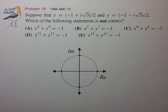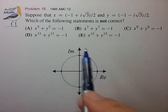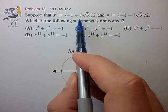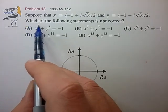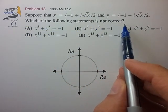Hi, and here's our second example complex number problem from the AMC-12. Suppose that x is equal to (-1 + i√3)/2 and y is equal to (-1 - i√3)/2. Which of the following statements is not correct?